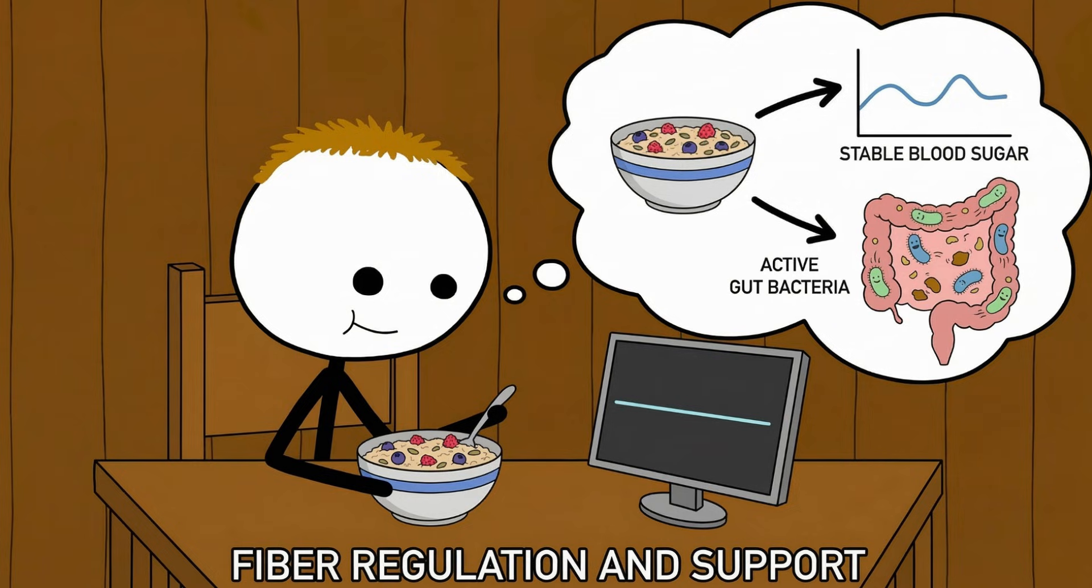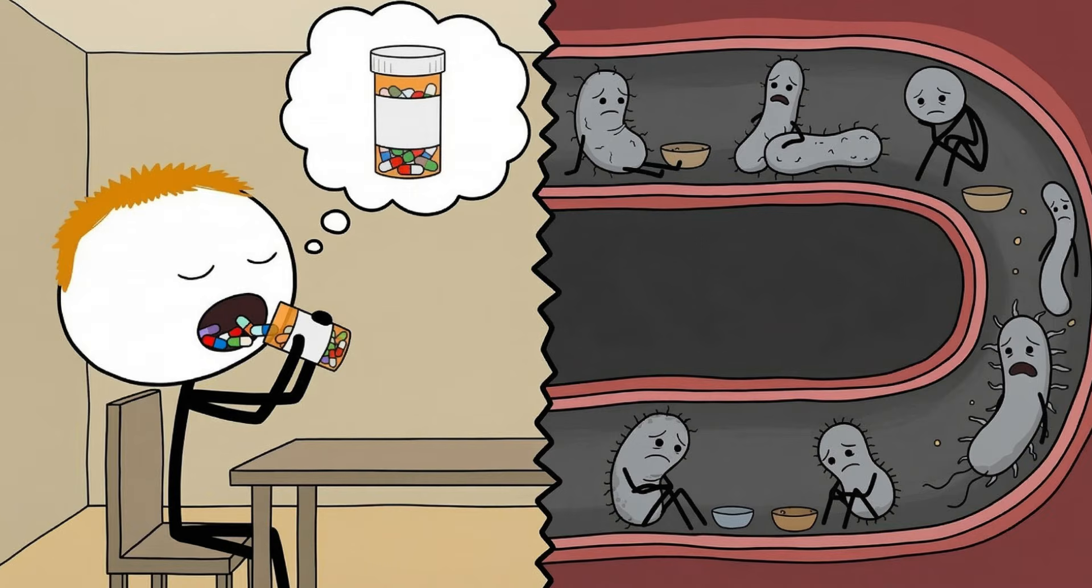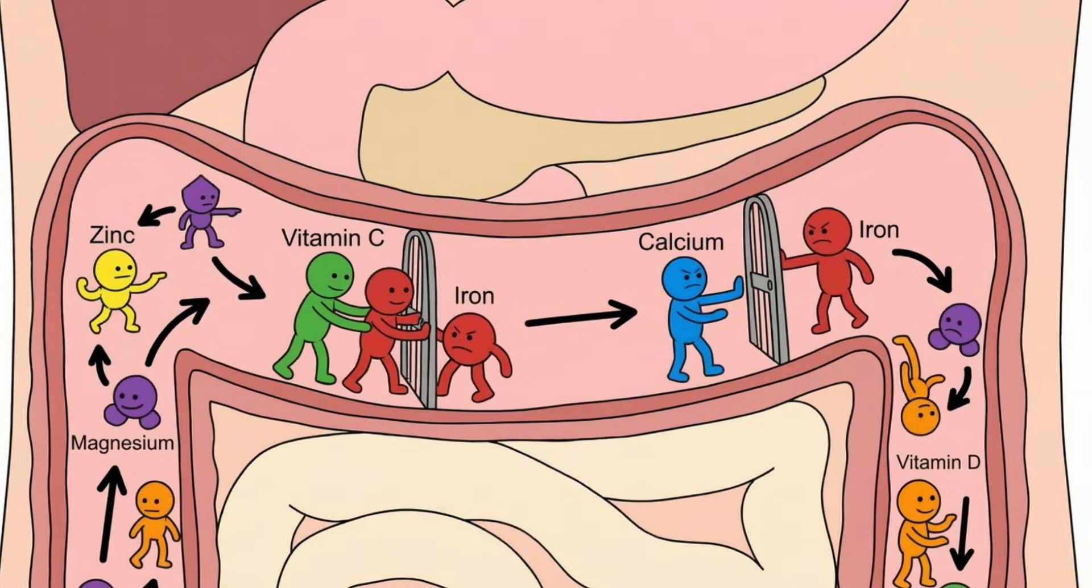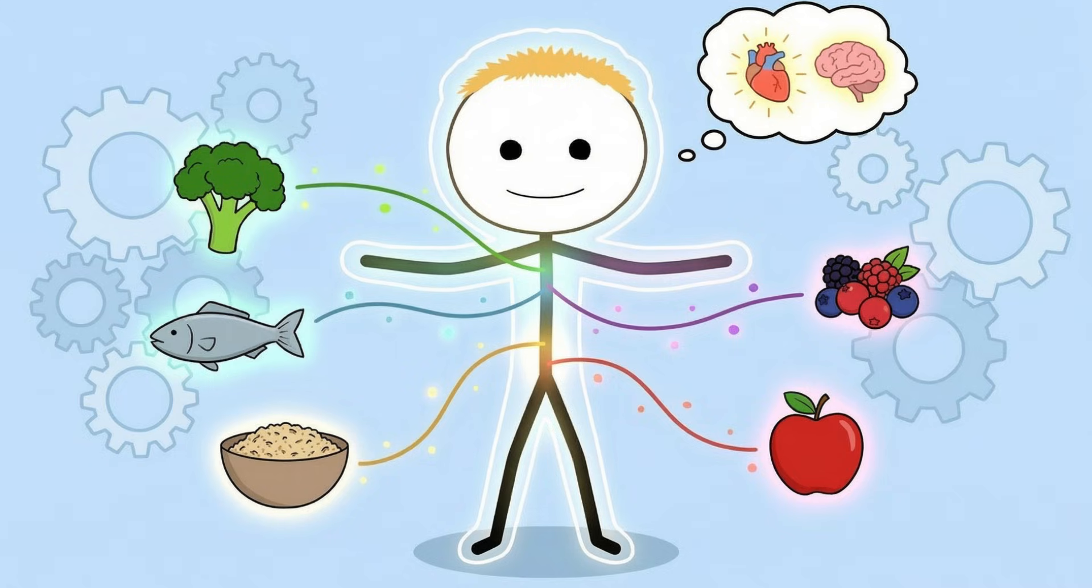Take fiber as an example. It regulates blood sugar, feeds gut bacteria, and reduces cardiovascular risk. No vitamin pill replaces that. You can swallow every nutrient on the label and still miss the structure that food provides. There's also nutrient interaction. Iron absorption depends on vitamin C. Calcium competes with magnesium. Fat-soluble vitamins need dietary fat. Food naturally solves these equations. Supplements guess.